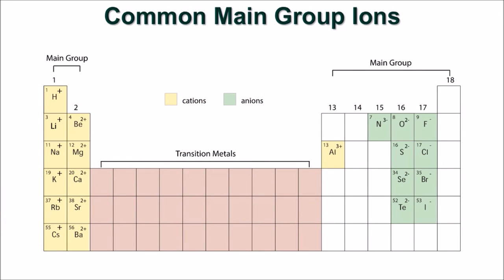Metals will lose electrons to form a cation. Non-metals will gain electrons to form an anion. Here are the main group ions and their typical charges listed on the periodic table.